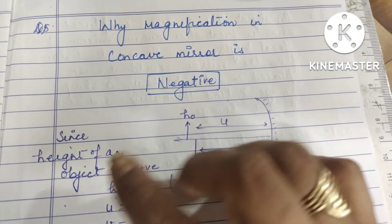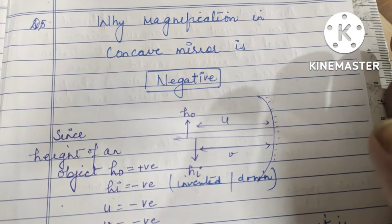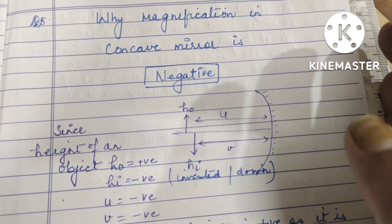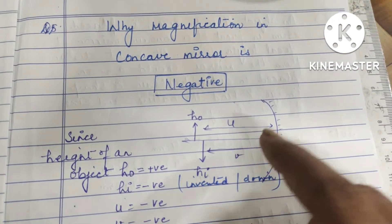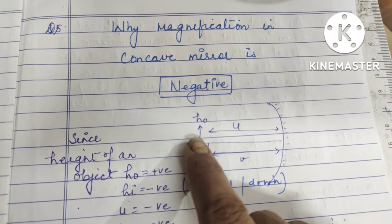You must watch the whole video. By the end of the video you will come to know why the magnification is negative. Let's start. So let's make a small concave mirror. We know that the object is also in front of the mirror, that is on the left hand side.